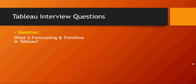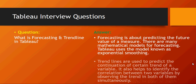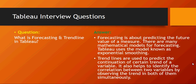What is forecasting and trend lines in Tableau? Forecasting is about predicting future measured values based on historical data by applying mathematical calculation models. The default model for Tableau is exponential smoothing. Trend lines are used to predict the continuation of certain trends — for example, the trend of a stock or clicks, showing a correlation between two variables, typically over a time dimension.